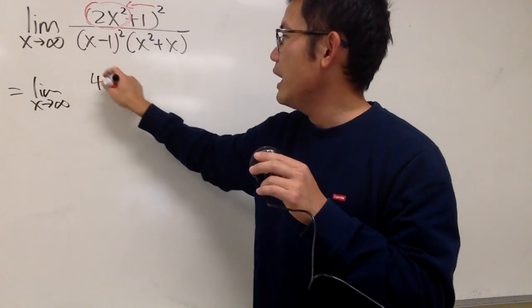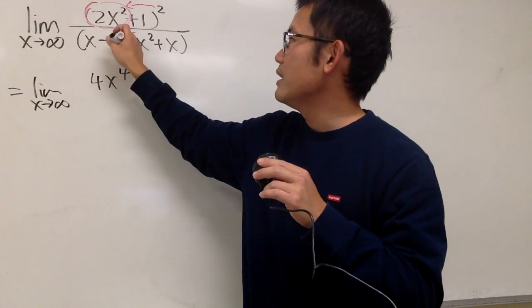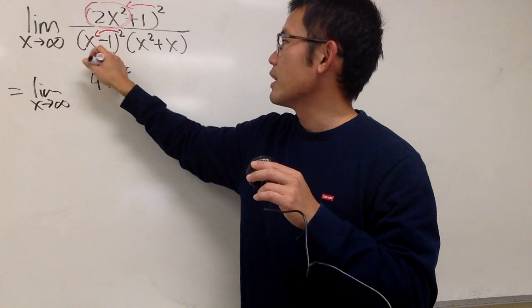We get 4x to the fourth power, right? And then, for the bottom, you see that we have the 2. You just square that, so you get x squared.